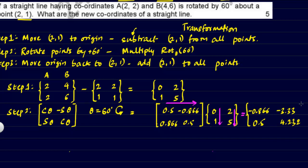These are the coordinates after rotation. At the end of step 2, after rotating the translated points about the origin by 60 degrees, we get these values. However, our reference point (2, 1) is still at the origin.